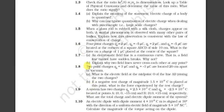In this video we will solve question number 8. Two point charges qA = 3 microcoulomb and qB = -3 microcoulomb are located 20 cm apart in vacuum. Part (a): what is the electric field at the midpoint O of the line AB joining the two charges? Part (b): if a negative test charge of magnitude 1.5 × 10⁻⁹ coulomb is placed at this point, what is the force experienced by the test charge?